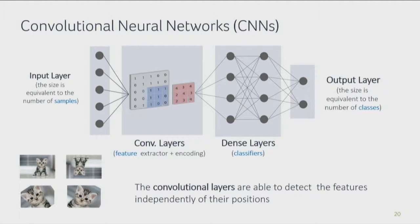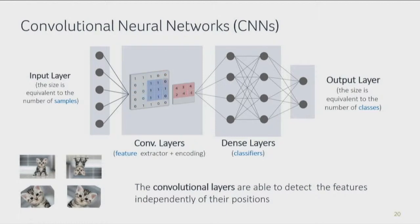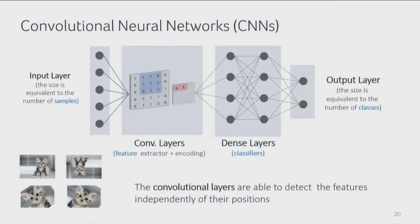We're going to be using one specific type of network called a convolutional neural network, designed for image processing. It has an input layer — in the case of cat pictures, one neuron per pixel. Then you have a number of convolutional layers that are trained to extract certain features. In the first layer it might extract edges; in the next it might use those edges to construct an eye, a nose, some fluffy ears; and in the next layer it combines these to recognize a cat face. After that come dense layers used for classification — they take the feature-extracted information and turn it into a probability for a class: cat or dog.